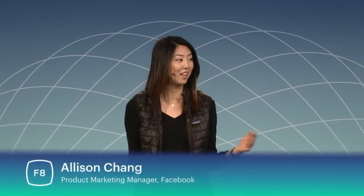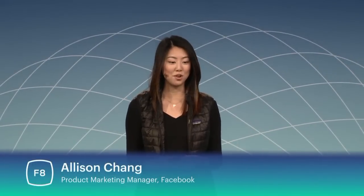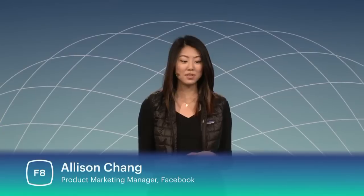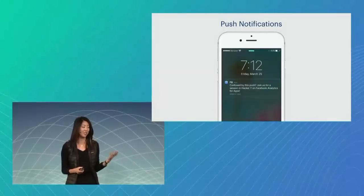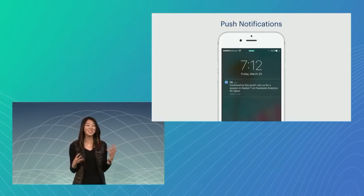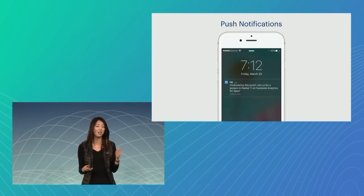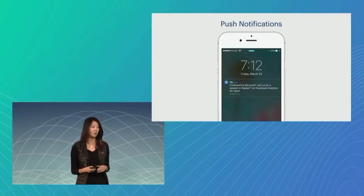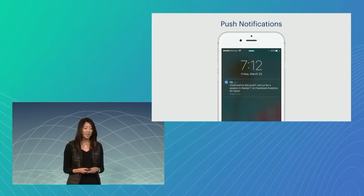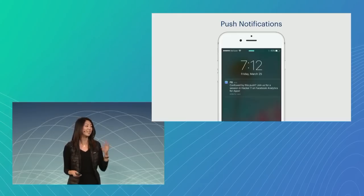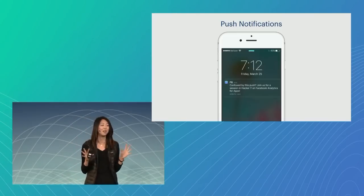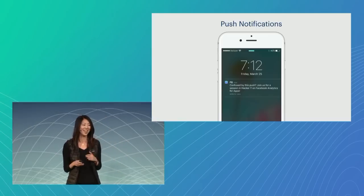So now that we've talked about the who and the how, let's talk about the what. What types of push notifications can you create with this product? Well, there are two specific types. The first is a notification that we're all familiar with — and for those of you with the F8 app downloaded today, you can actually see this in action. Essentially this is just the notification that appears on the lock screen. You'll swipe to unlock and it deep links to a specific place in that app. The copy reads: 'Confused by this push? Join us for a session in Hacker Why on Facebook Analytics for Apps.' The primary purpose of this particular push campaign was just to create FOMO for everybody else that didn't come to this session today.